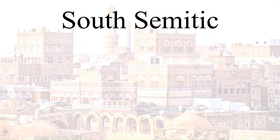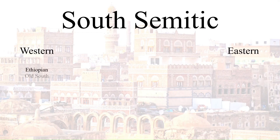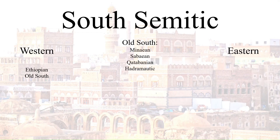As for South Semitic, we can divide it two main ways: Eastern and Western. Western is the most spoken sub-sub-branch, and can be divided two more ways — Ethiopian and Old South. Old South Arabian Semitic languages are now all extinct, but were once spoken in the southwest of the Arabian Peninsula in present-day Yemen. These languages included the following, and though it's widely understudied and debated amongst linguists, it's possible that two living languages, Rahizi and Faifi, are descended from Old South Arabian, though the lines get blurry as officially they are Central Semitic.